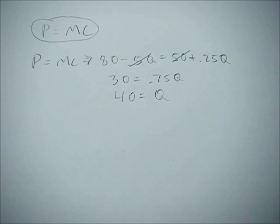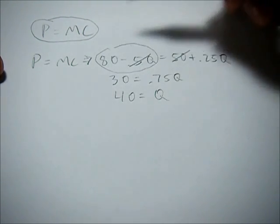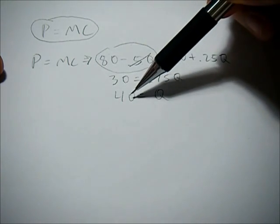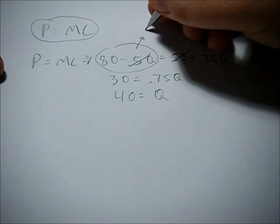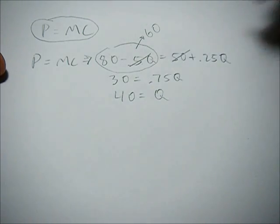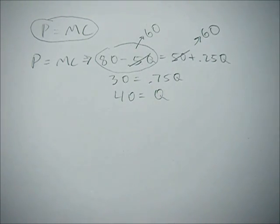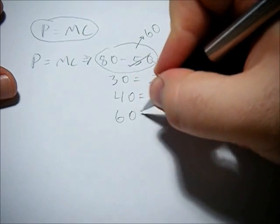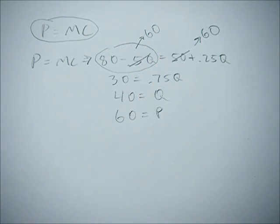So our equilibrium quantity is 40. We can now plug that into our inverse demand function, or our marginal cost function, or both, to solve for equilibrium price. So if we plug it into our inverse demand function, we get 80 minus 0.5Q, or 20, equals 60. If we plug it in here, we get 50 plus 0.25Q of 40, which is 10, or 60. So that's good. Our equilibrium price is going to be 60. And we've confirmed it by plugging it into both our inverse demand and our marginal cost function.